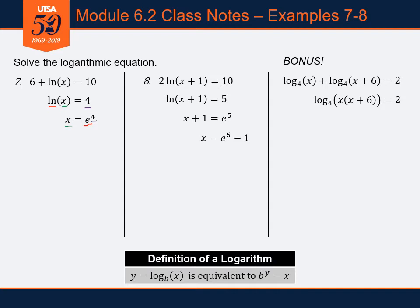Sometimes we need those log properties to work through logarithmic equations. Now we have a single logarithm equal to a number. Using the definition of the logarithm, log base 4 of x(x + 6) equals 2 translates to: 4 squared equals x times (x + 6). Since 4 squared is 16, distributing gives x squared plus 6x.